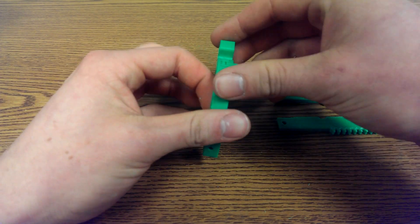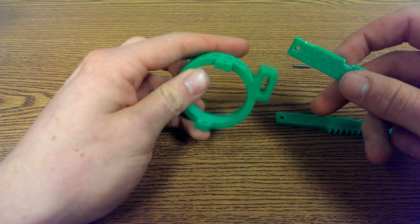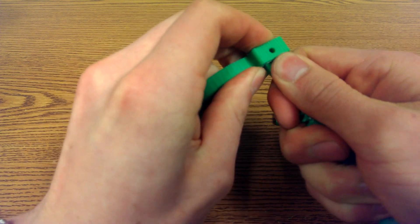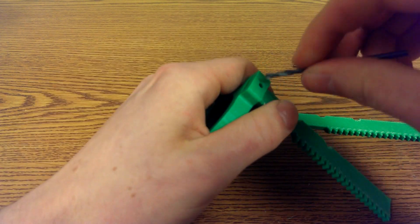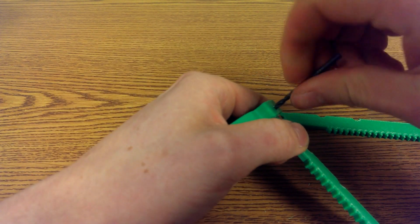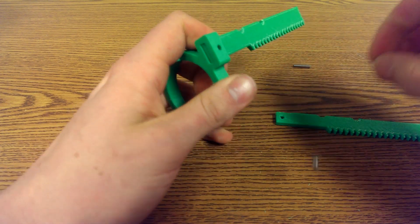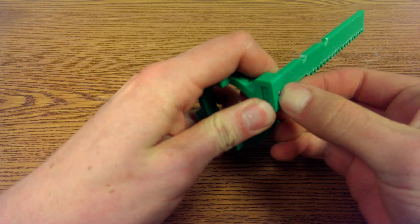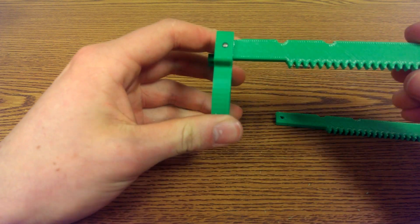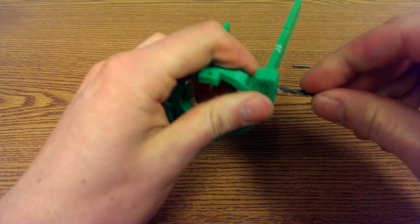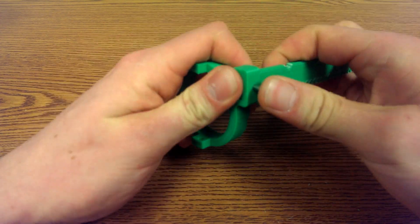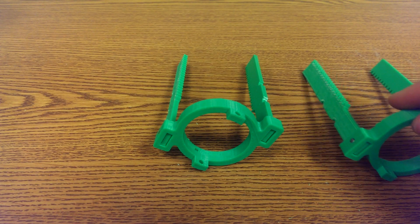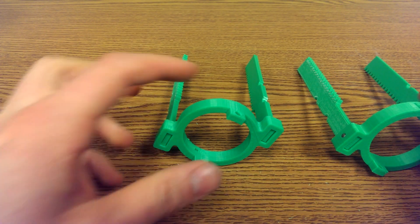Next you can take the two racks and attach them to the transformation mechanism part A so that the flat part of the part A is facing the racks. Now I had to clear out the holes a little bit but once you do that you should be able to push one of the metal pins right in to secure them. And then just like the wheel you are going to need two of them for the complete robot.